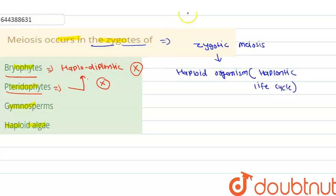so that is also incorrect. Third one is gymnosperm - gymnosperm is having the diplontic life cycle, so that is also incorrect. Haploid algae - haploid algae is having the haplontic life cycle,